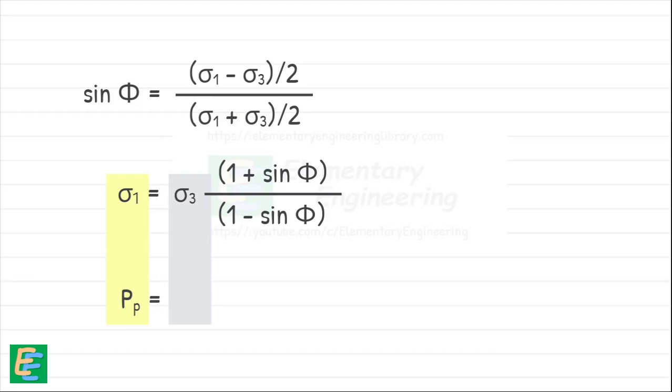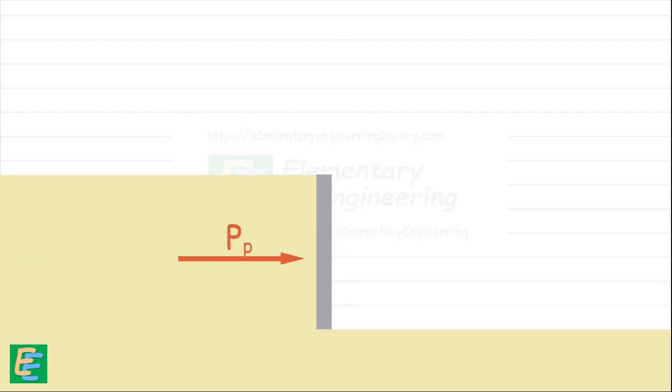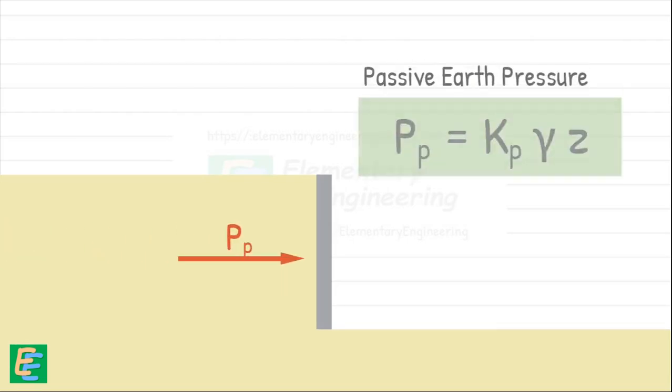Sigma 3 is the vertical stress, gamma z, and this ratio is called Kp, the coefficient of passive earth pressure. So, we can now express the lateral earth pressure in the passive state as this.